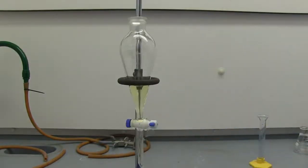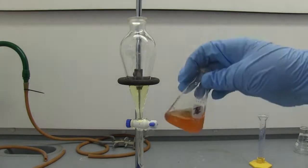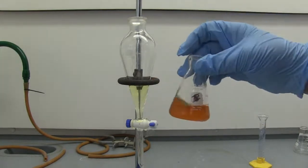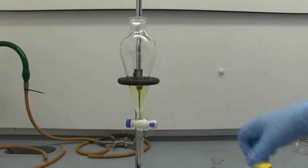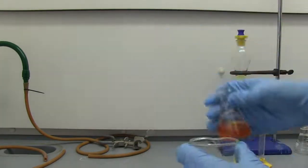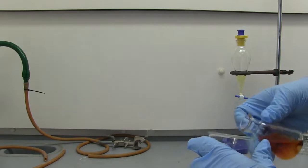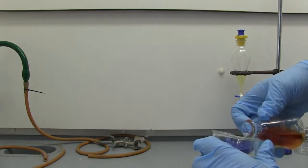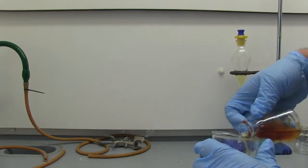So now that we have our dichloromethane extracts, we are going to dry them with some sodium sulfate and then transfer it to a beaker to evaporate. All right, so now we will decant our solution into a beaker, trying to leave all the sodium sulfate behind.